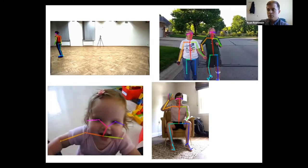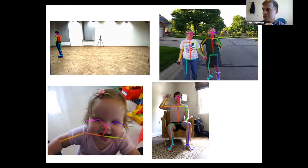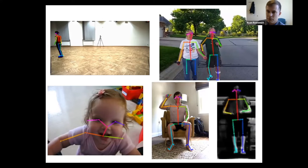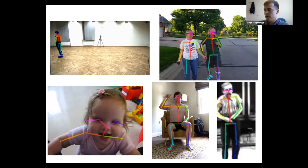Our focus today is on walking, but our lab is also interested in assessing other aspects of human movement. We've included a hand model in the pose estimation approach, so not only can we track the whole body, we can also track fingers and hand movements. We even tested this on one of the earliest known videos of someone with Parkinson's disease recorded over 100 years ago — despite the black-and-white, poor-quality video, we're still able to track that person's movement, demonstrating applicability across a wide variety of video qualities.